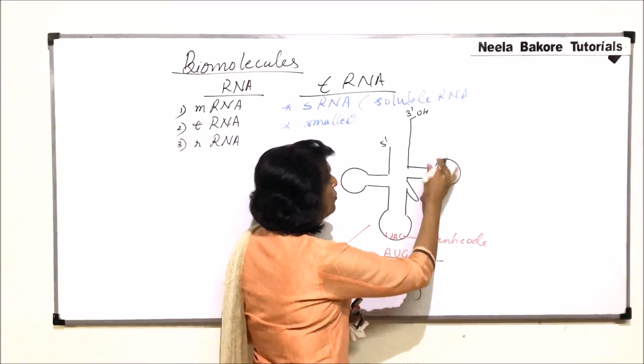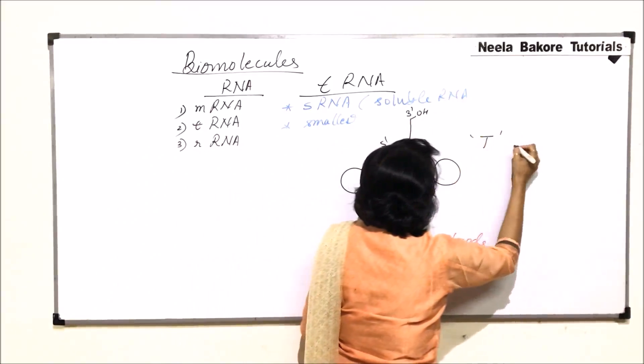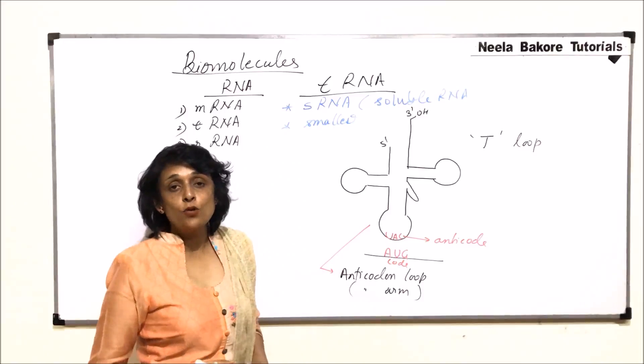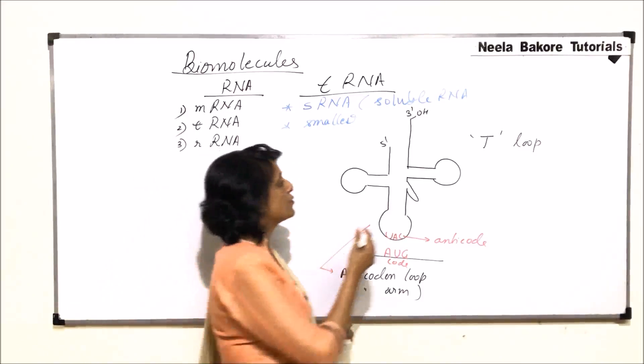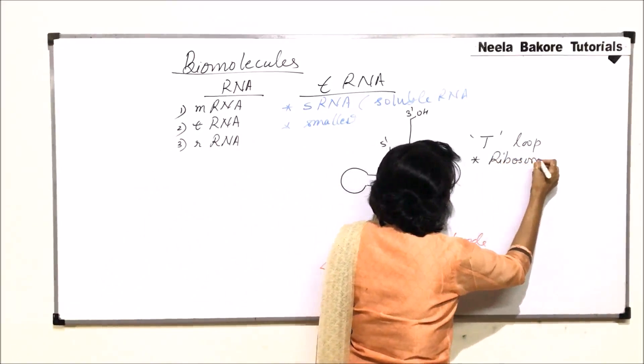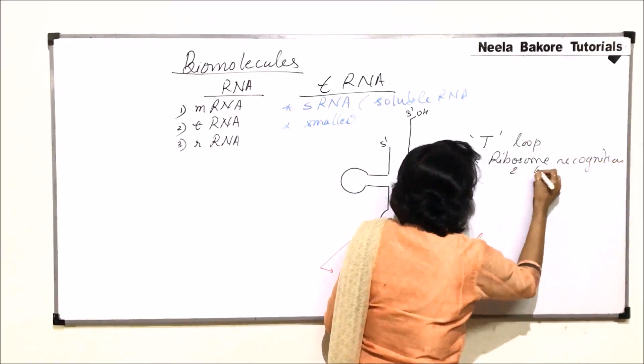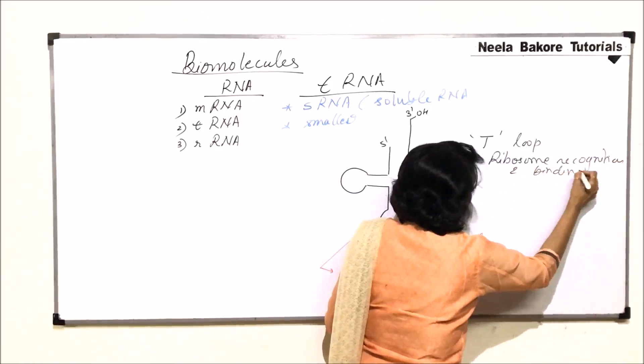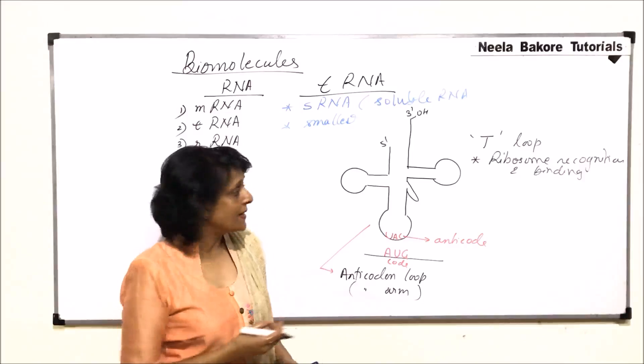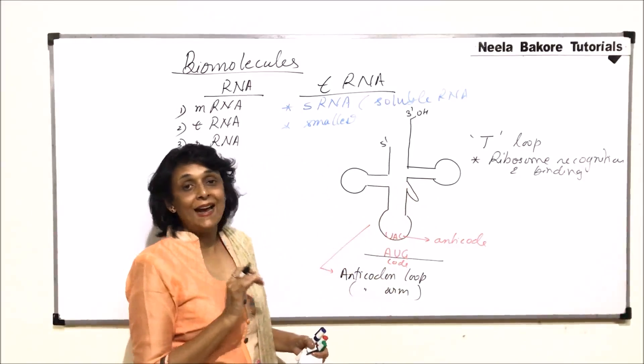The loop which is towards the third end is known as T loop. And its function is ribosome recognition and ribosome binding. It helps in ribosome recognition and binding. So it helps in identification of that ribosome where this protein synthesis is taking place and to which ribosome this tRNA is going to go and attach.